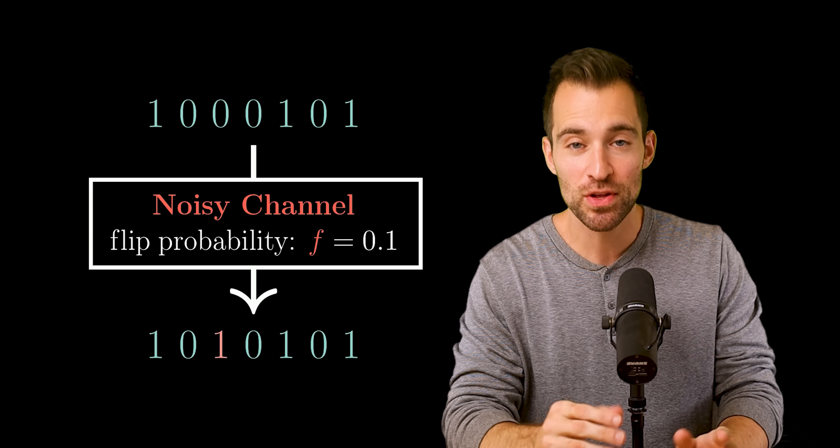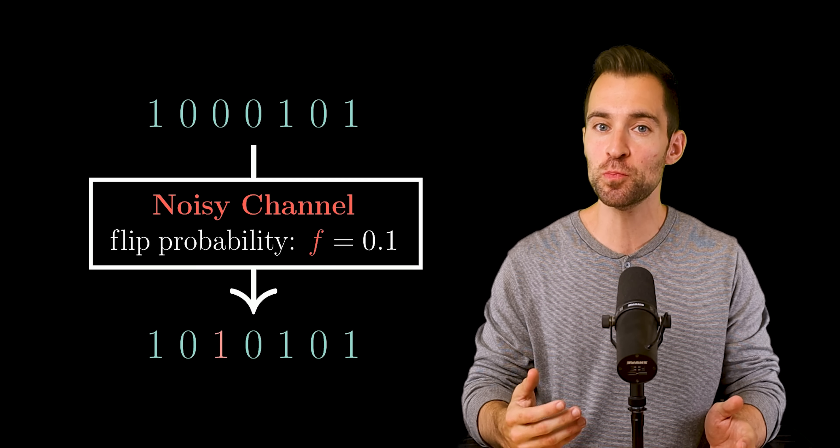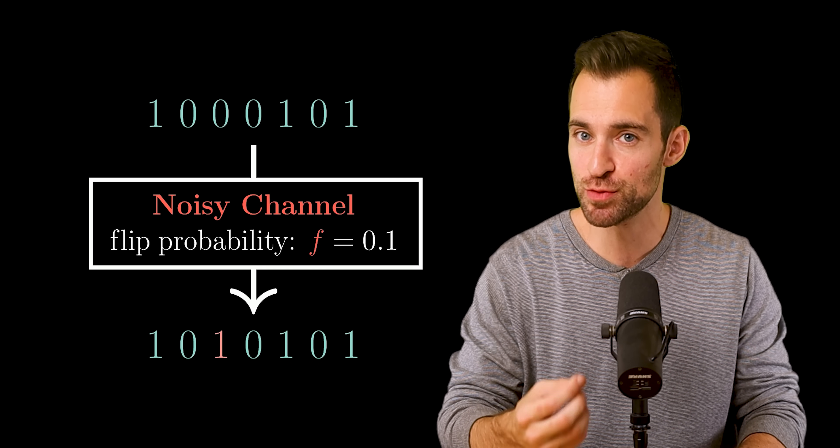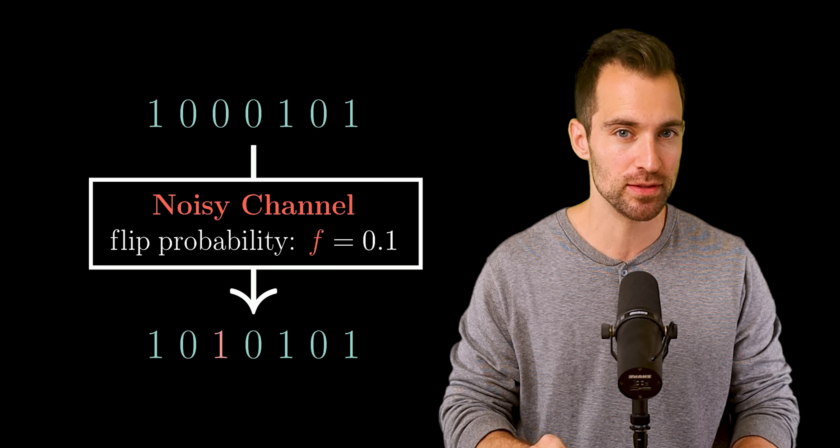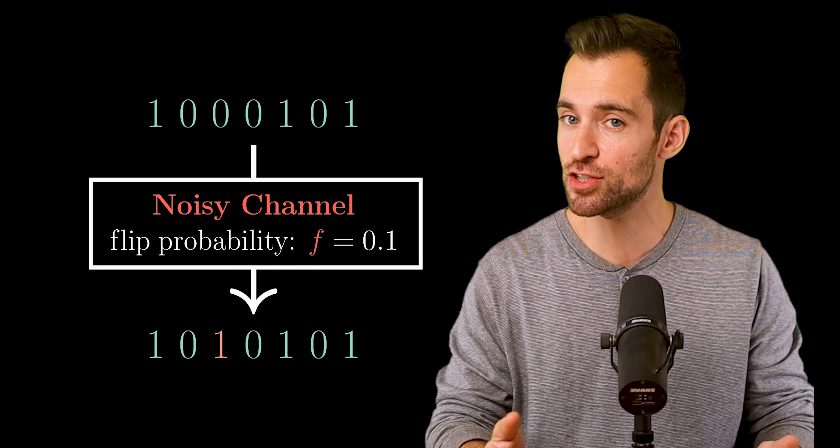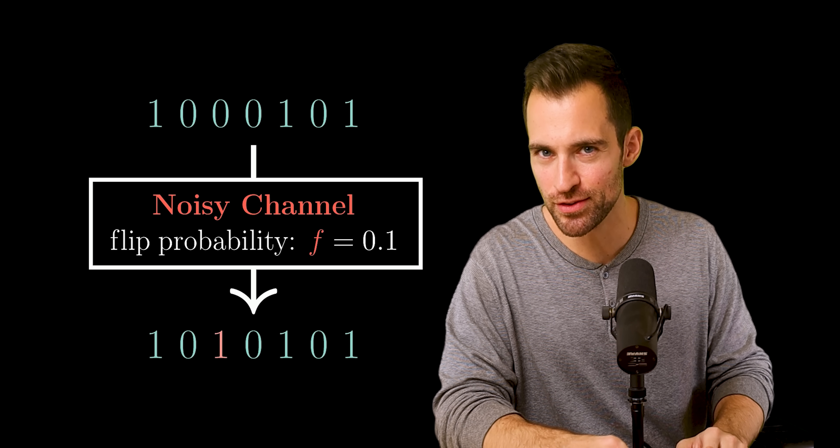Now to handle this, you and the receiver can agree upon some procedure before you start sending messages. That is, you will encode the message in a special way so that it can handle noise. Once received, the receiver will decode the noisy message to determine what you intended. So how might you do this?